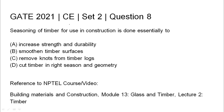GATE 2021 Civil Engineering set, question 8: Seasoning of timber for use in construction is done essentially to — first option: increase strength and durability; second option: smoothen timber surfaces; third option: remove knots from timber logs; and fourth option: